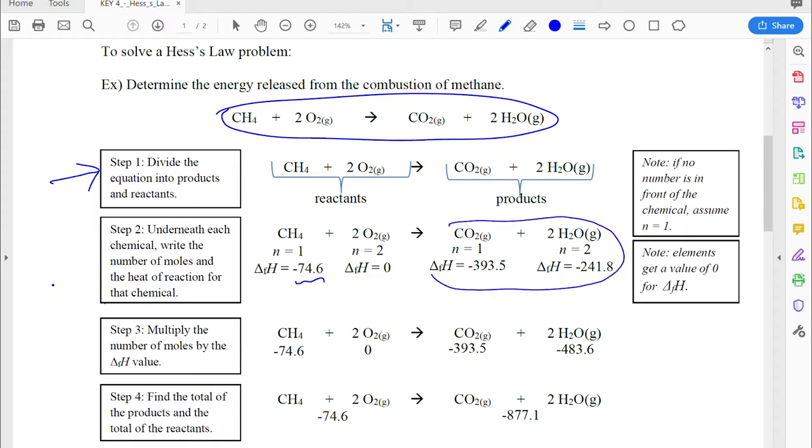The interesting thing about this is all the reactions we're going to look at in Science 30 are combustion reactions for this. So you're always going to have these same two products. So for every one of the examples we're looking at, you should have the same two products on the right hand side.